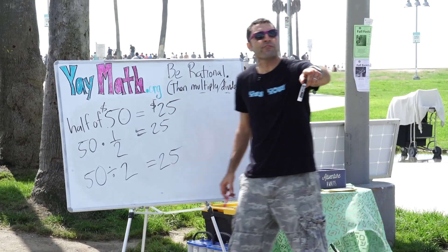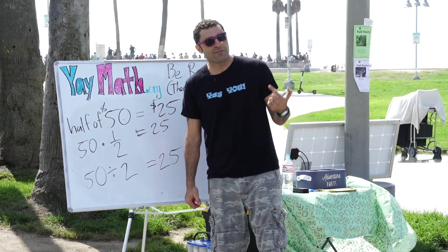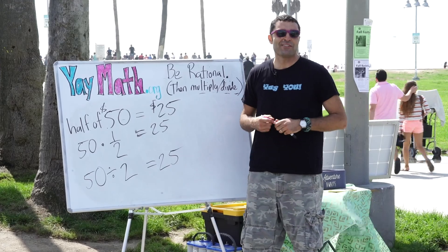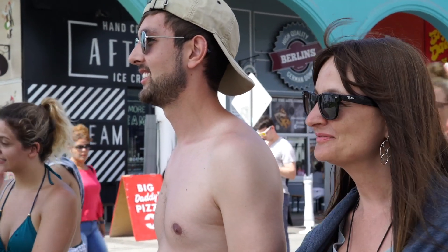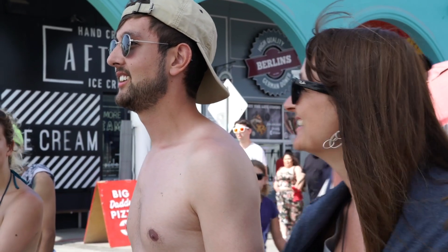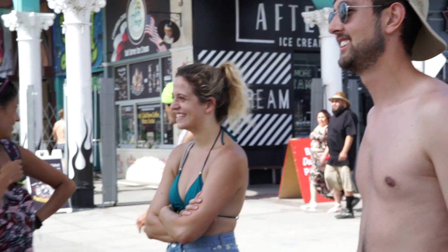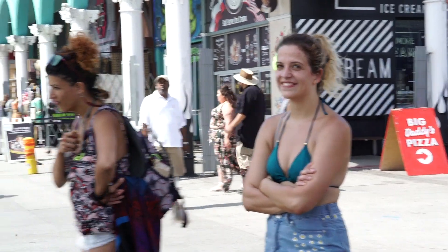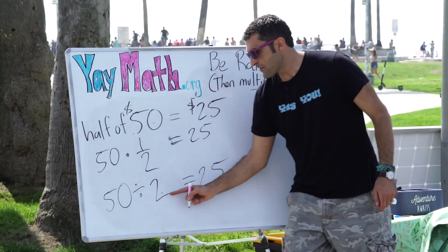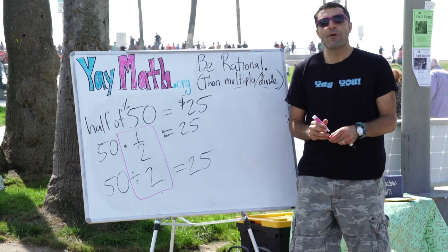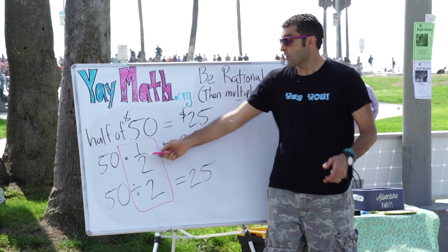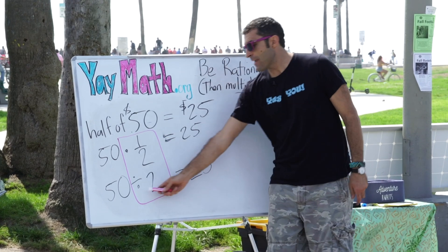So this leads us, this stumbles onto something. We're stumbling onto a truth: 50 times a half is 25, and 50 divided by 2 is 25. So that would have to mean that multiplying by a half is the same as dividing by 2.